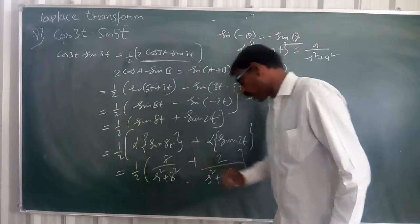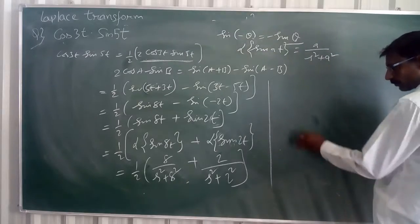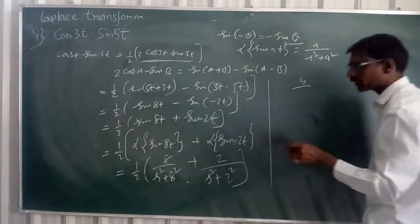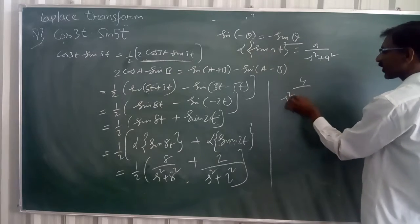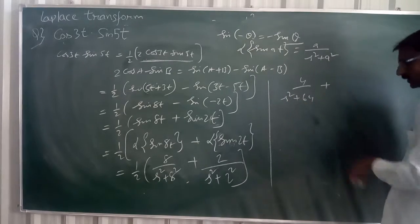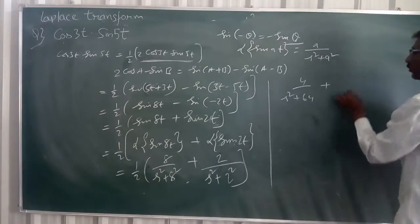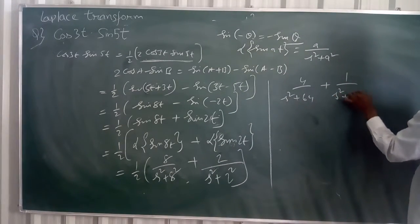When we multiply this one we get 4 by, because this is multiplied by this one, this is 4 by s square plus 64 plus, oh no no, this is multiplied by this one, we get 1 by s square plus 4.